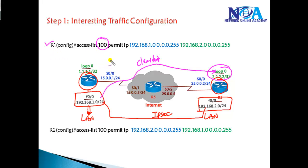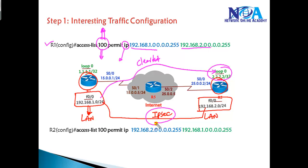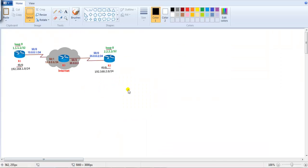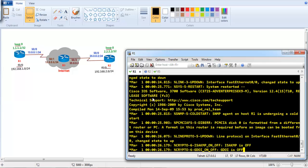Now we're defining interesting traffic using ACL 100. I'm not restricting to specific protocols — I'm permitting all IP traffic coming from the 192.168.1.0 network destined for the 192.168.2.0 network. This ACL will be used in later steps. Anything that doesn't match this ACL will go in clear text. This is step one: defining which traffic requires IPSec parameters.